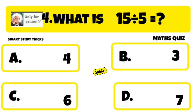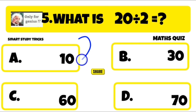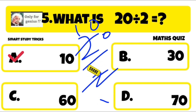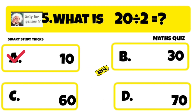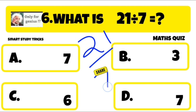Quiz number 5 is: what is 20 divided by 2? 20 divided by 2 is equal to 10. Right answer is A: 10.